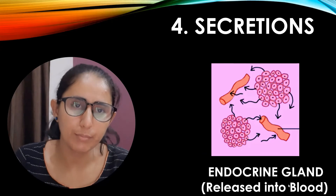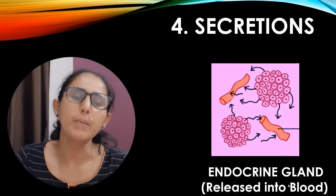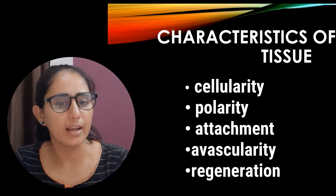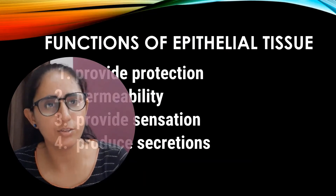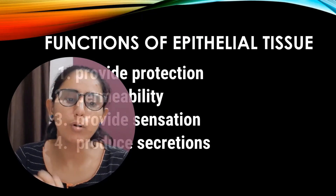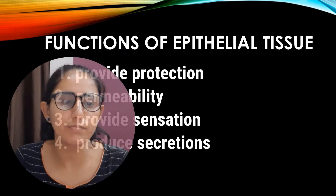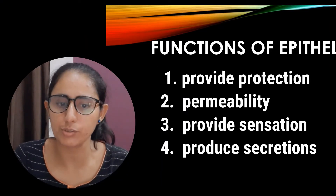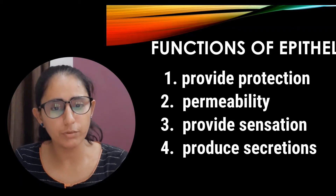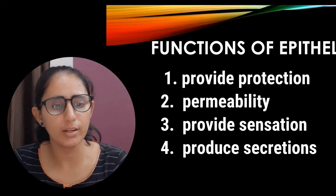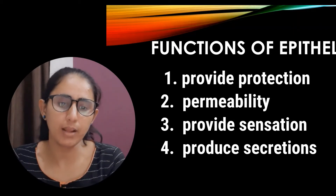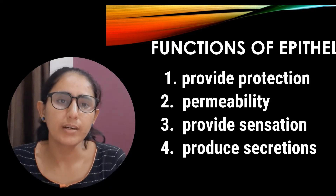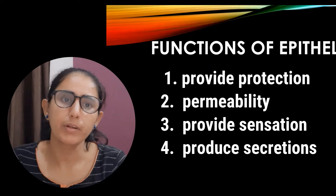In summary, all epithelial tissues share the same five characteristics: cellularity, polarity, attachment, avascularity, and regeneration. They also share the same four basic functions: providing protection for the body, controlling permeability by regulating what comes in and what stays out, providing sensation to detect temperature and pain, and producing secretions for the body.